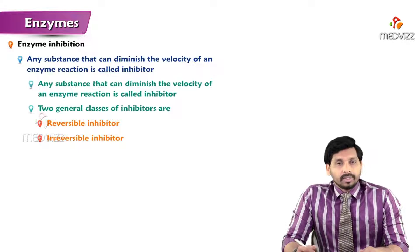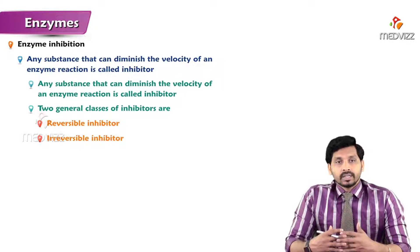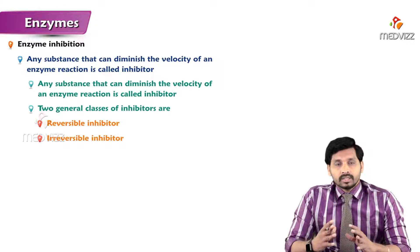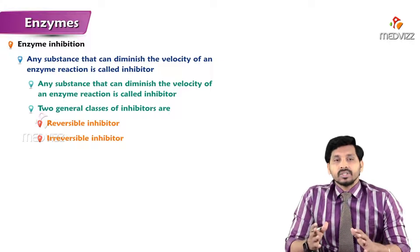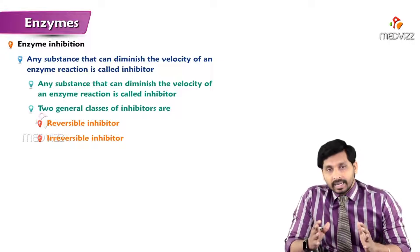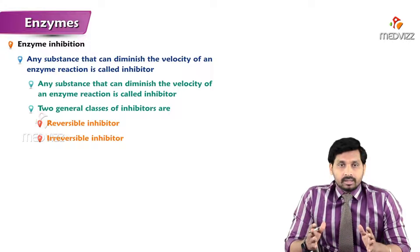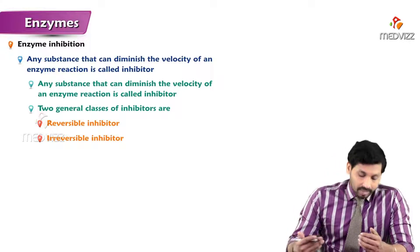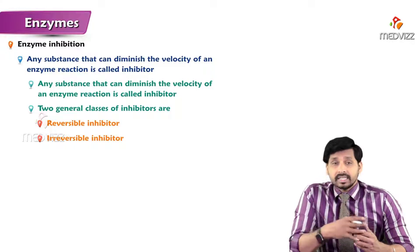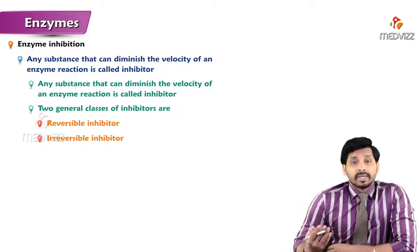In this video we'll be talking about enzyme inhibition. In our previous videos we already discussed enzyme velocity — how the rate of reaction is influenced by different factors. Similarly, there are substances which can inhibit enzyme activity. Those substances which inhibit enzyme activity and produce no product are known as inhibitors. The textbook definition: any substance that can diminish the velocity of an enzyme reaction is called an inhibitor, and such inhibition is known as enzyme inhibition.